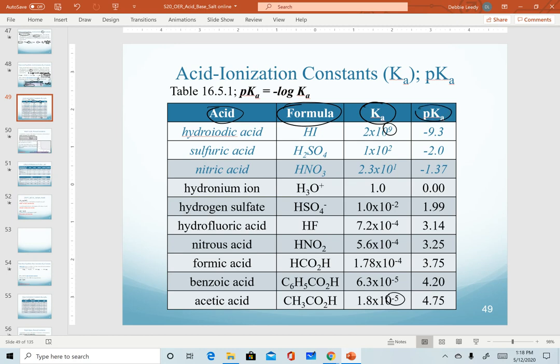And notice the last column that's listed in here is a value of pKa. And this is nothing new. So at the top here, I have our formula for it. Remember that the little p in front of any notation means we're going to take the negative log of that notation or of that value. And so pKa is simply the negative log of our Ka value.